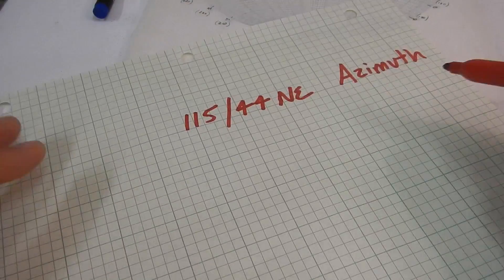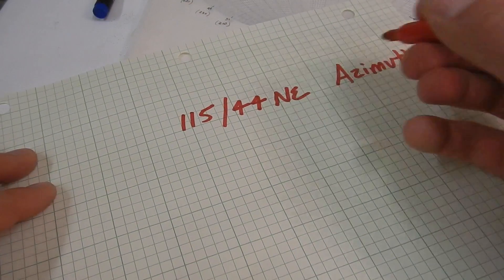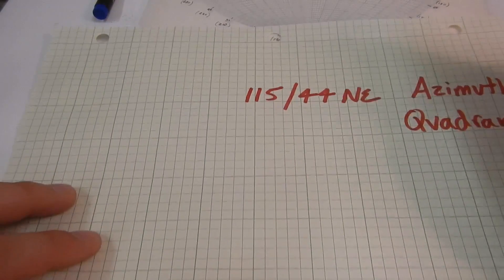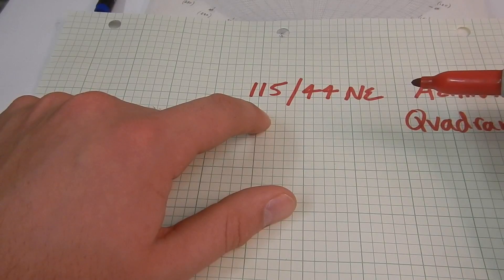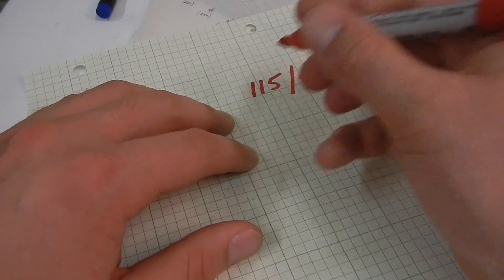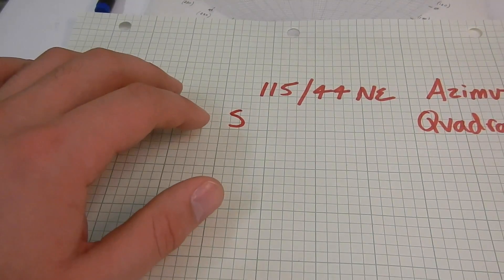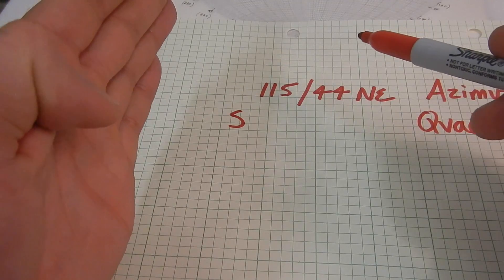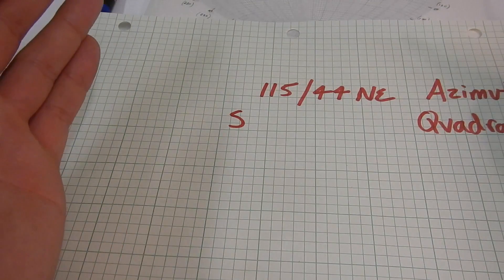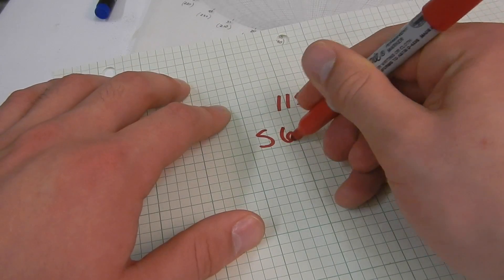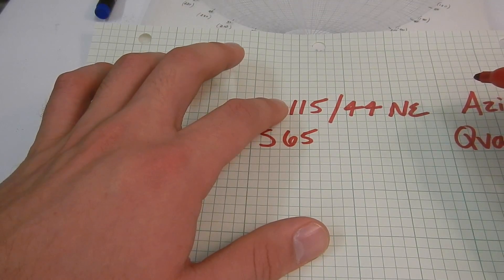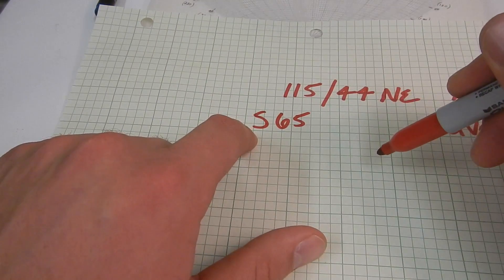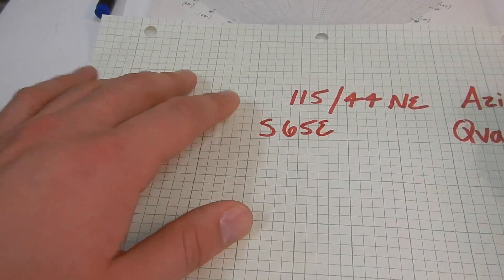To convert azimuth 115 to quadrant notation: 115 is past 90 degrees, so we're in the southern hemisphere — it will start with South. From south (180°), we calculate 180 minus 115 equals 65. Since 115 falls in the eastern hemisphere, our quadrant strike is South 65 degrees East, written S65E. That's our strike in quadrant notation.